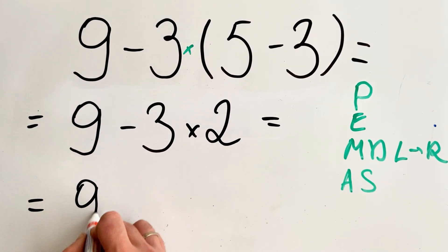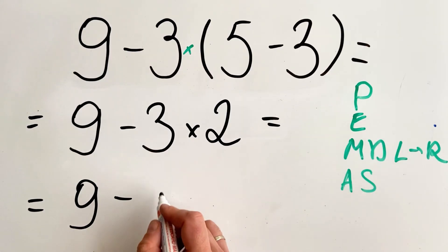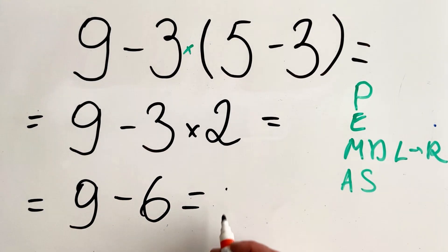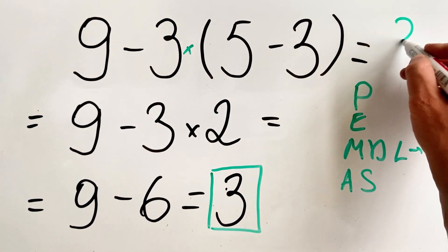The result will be 9 minus 3 multiplied by 2... 6, and equals 3. The correct answer is 3.